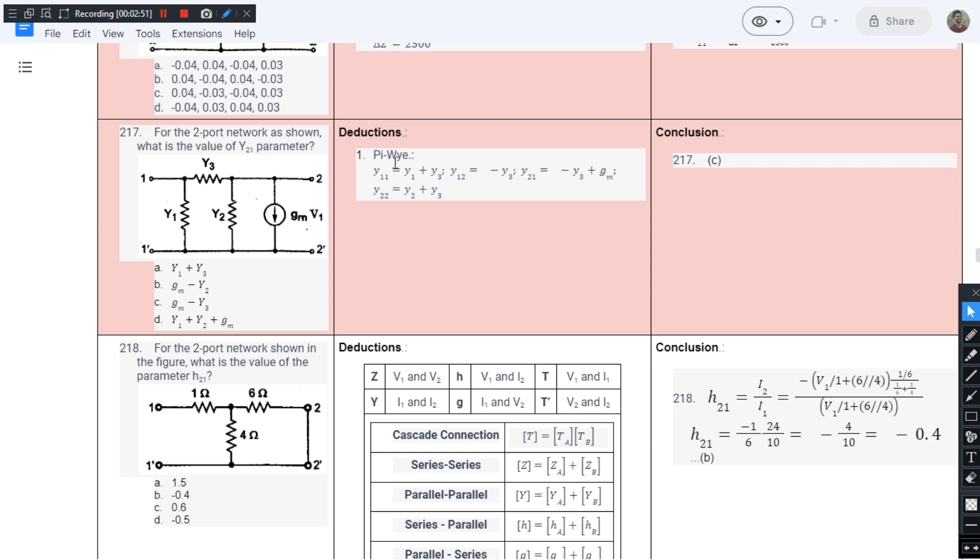You will have to know why we are taking minus sign instead of plus sign, how it becomes minus into minus plus. You will have to do your homework. If you can understand, it's fine. If you don't understand, go through the textbooks. There you will find the ways in which these dependent sources work.